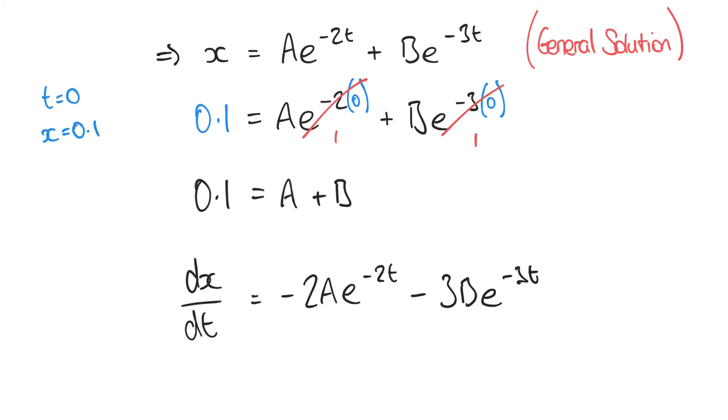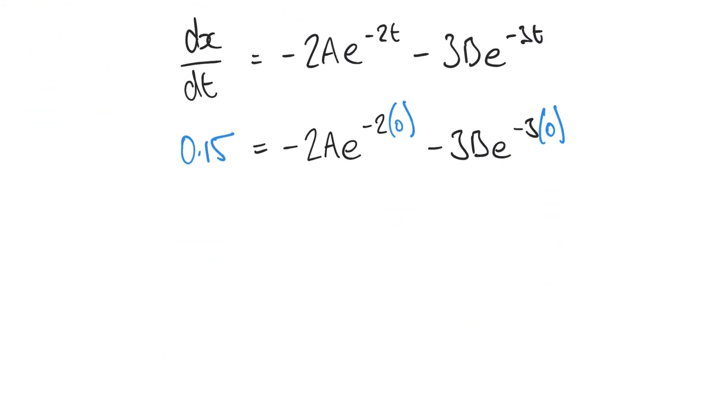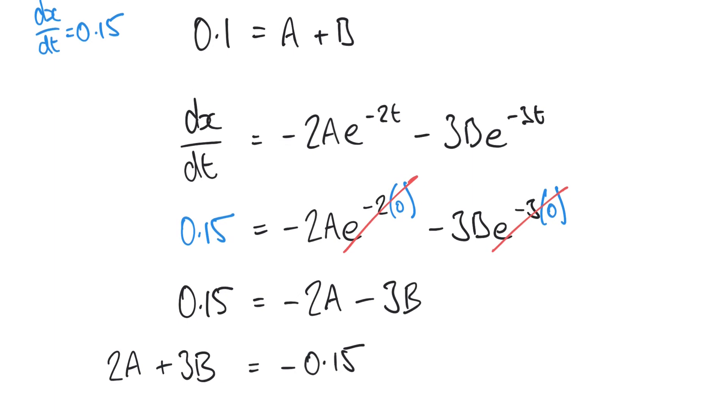And again returning to those initial conditions, we were told that at time t = 0 the velocity dx/dt is equal to 0.15. And so we can say here 0.15 = -2Ae^(-2·0) - 3Be^(-3·0). And again those e to the power 0 terms are going to disappear, we're left with 0.15 = -2A - 3B. And similarly we could rearrange slightly to say that 2A + 3B = -0.15.